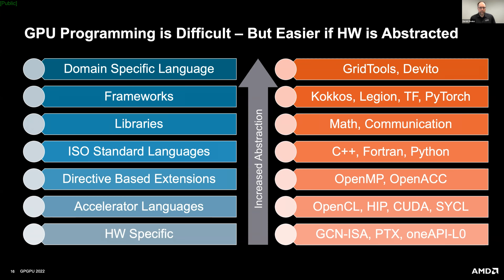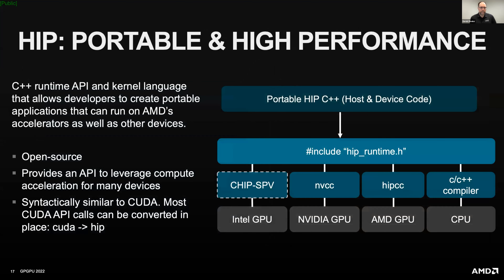Let's continue with what AMD is doing with HIP — the accelerator language, very similar to CUDA. We've had great success with it in terms of porting applications over to HIP and then being able to run on many other devices. HIP is a runtime API as well as a kernel language you can develop with. It looks very similar to traditional CUDA programming for accelerators, and it's fully open source — everything published on GitHub.